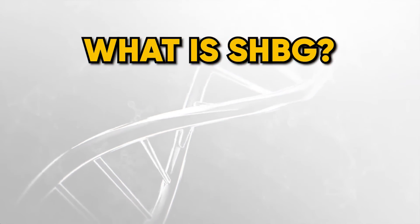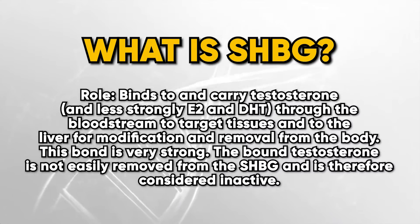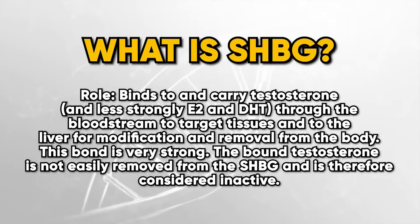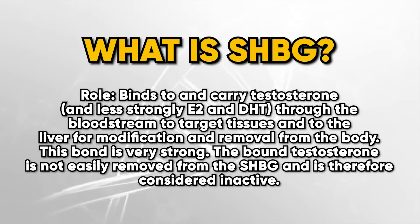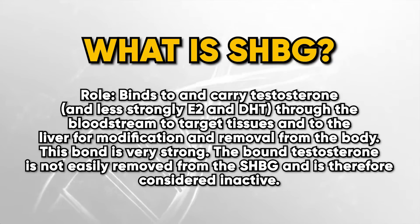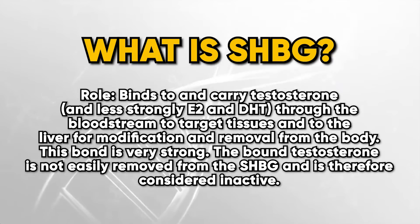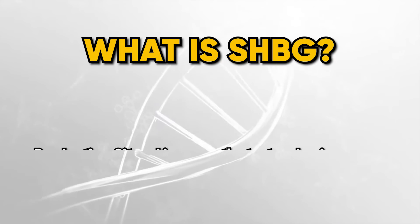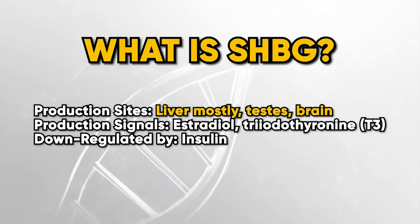So what is sex hormone binding globulin? SHBG binds to and carries testosterone, and less strongly estradiol (E2) and dihydrotestosterone (DHT), through the bloodstream to target tissues and to the liver for modification and removal from the body. This bond is very strong — the bound testosterone is not easily removed from the SHBG and is therefore considered inactive. SHBG is produced mostly in the liver, the testes, and the brain.